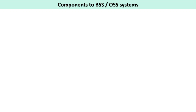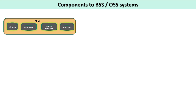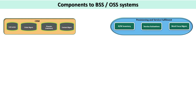In this video we are going to discuss the components of OSS and BSS systems which are connected to each other to provide a seamless user experience. The first thing is your CRM, and the next comes provisioning and service fulfillment. Whenever a subscriber is activated, their data gets entered into the CRM database, and that is done with the help of provisioning and service fulfillment.